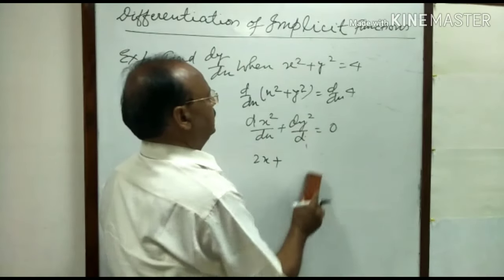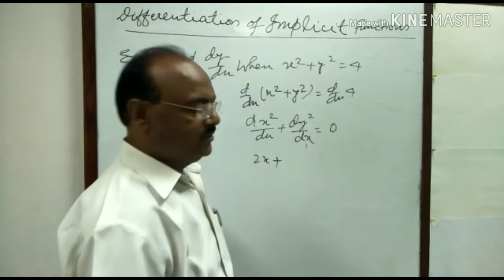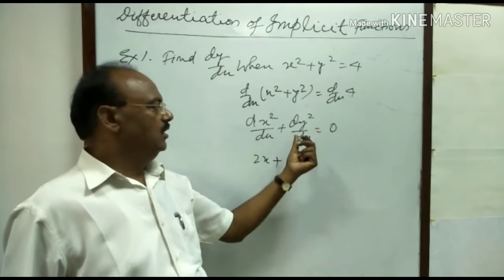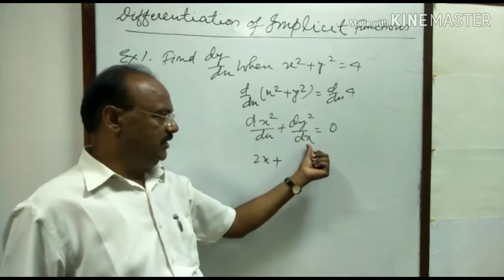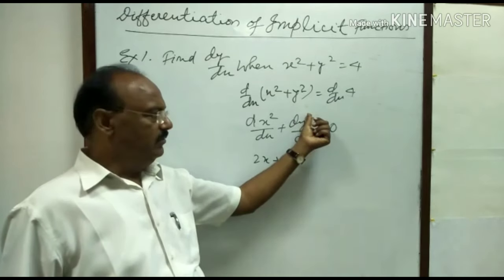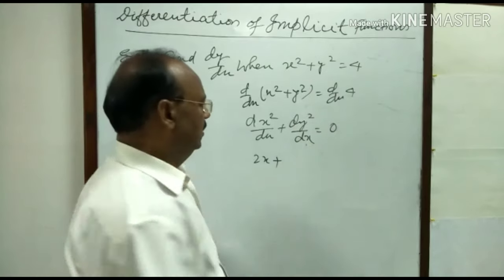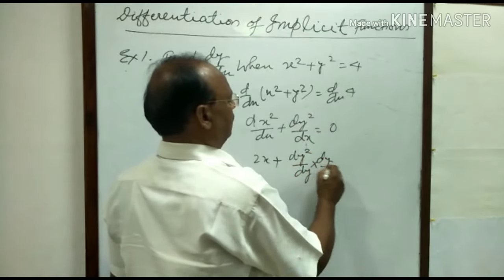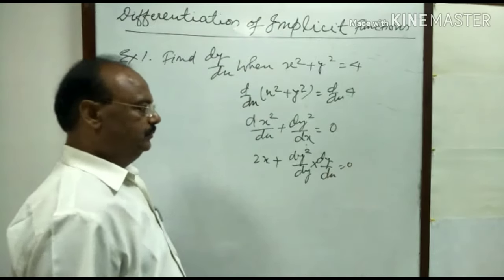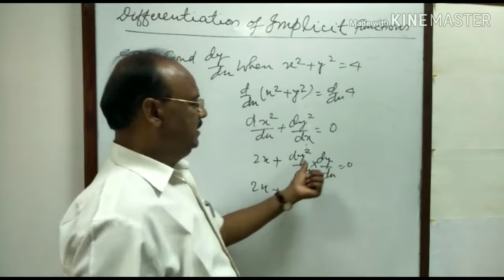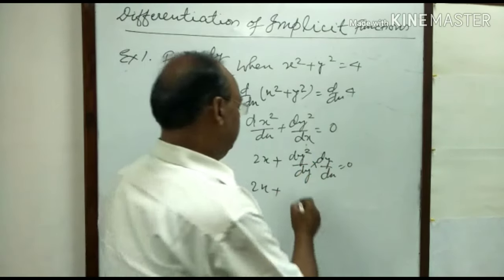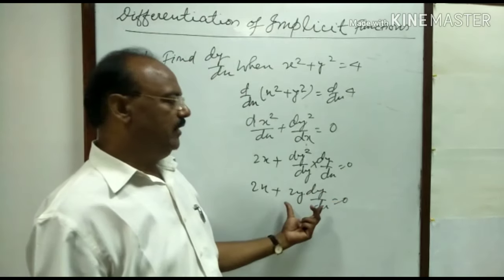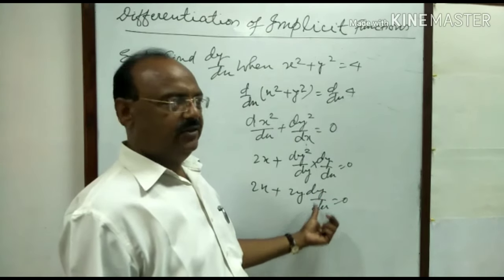We can use chain rule here for y square. First y square will be differentiated with respect to y, and then multiplied by derivative of y with respect to x. This can be written as derivative of y square with respect to y into dy/dx. The derivative of y square with respect to y is 2y, so we get 2y dy/dx.